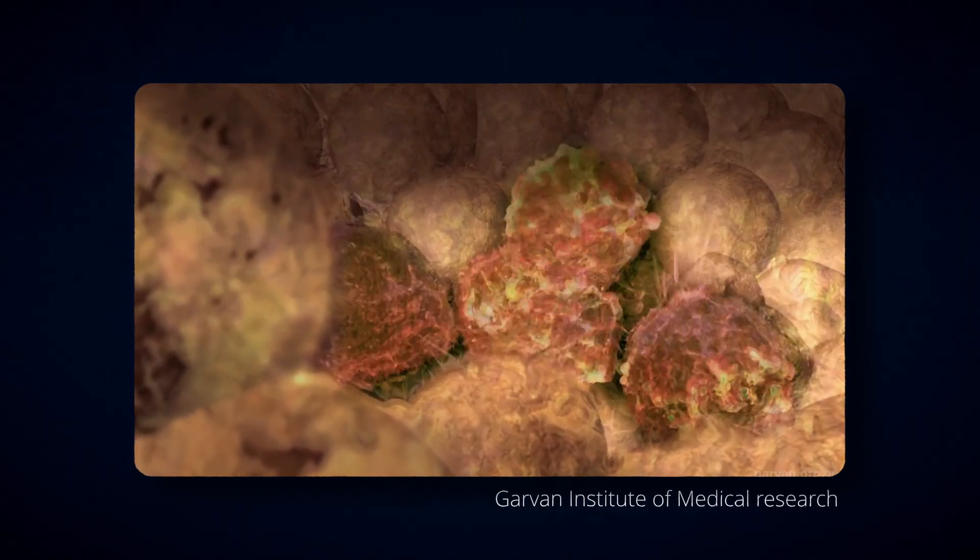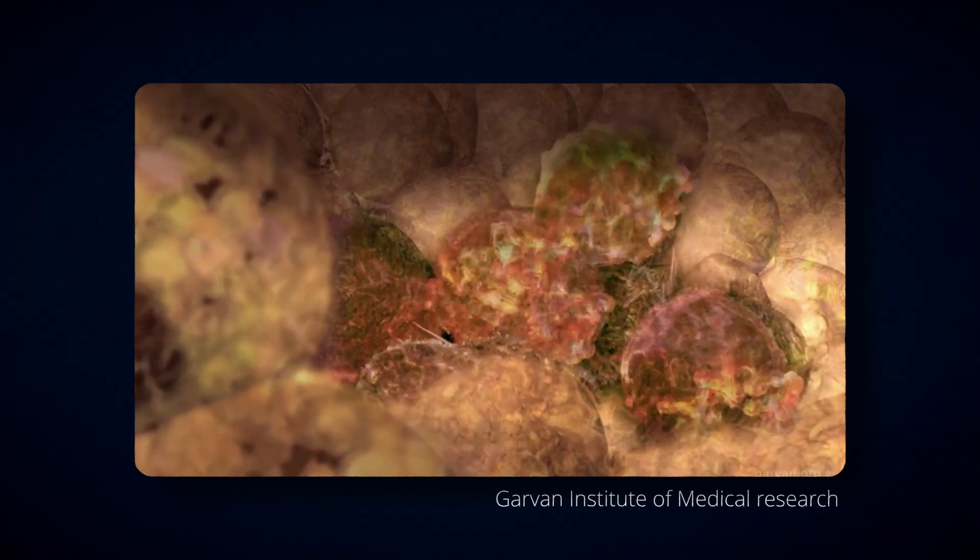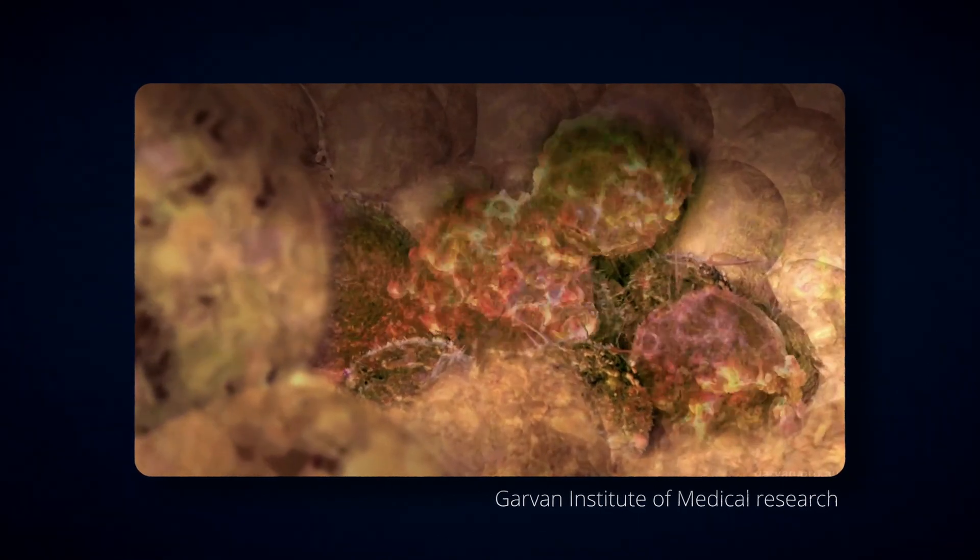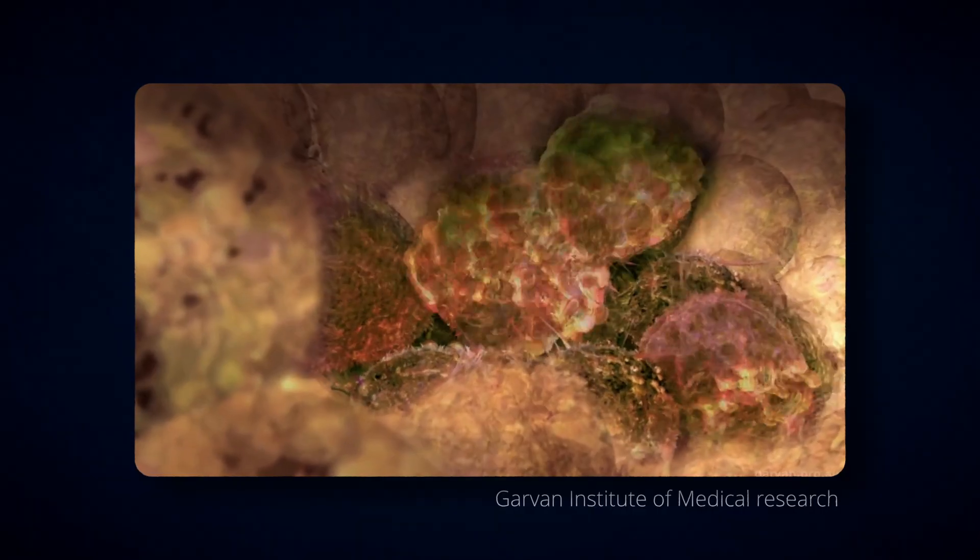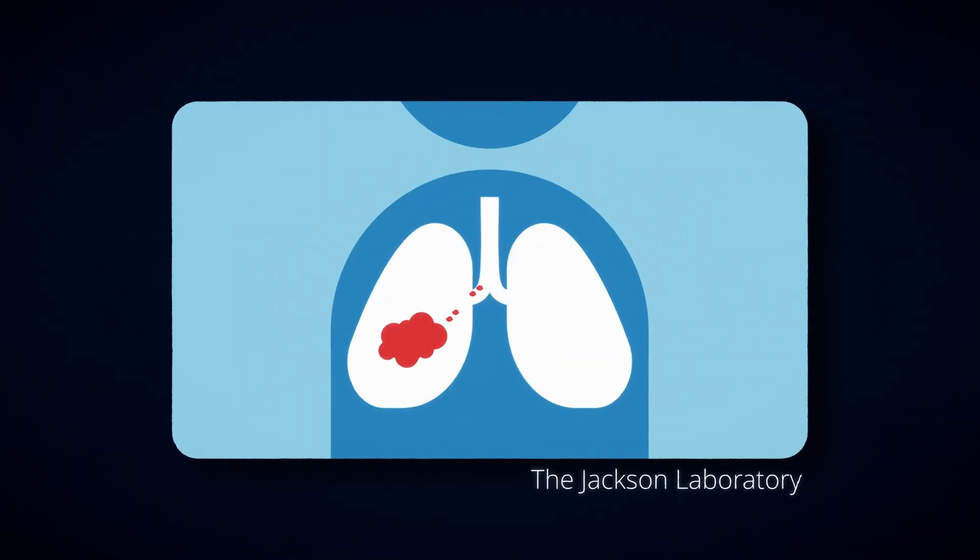The balance tips. Blood vessels grow into the cancer, delivering oxygen and nutrients. And from that moment on, the tumor can expand, invade local tissue, and eventually spread to other parts of the body through those very same new vessels. Unfortunately, this angiogenic switch often happens long before we detect the cancer clinically.